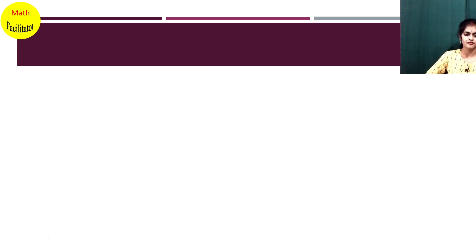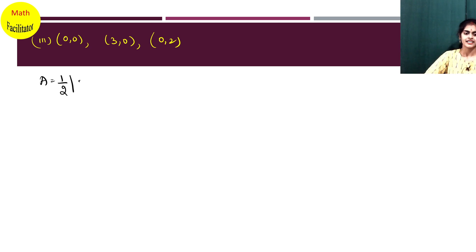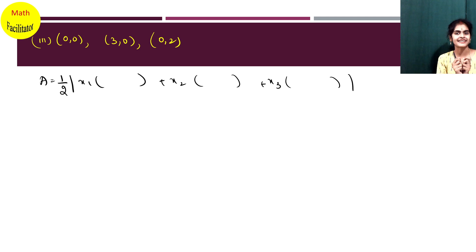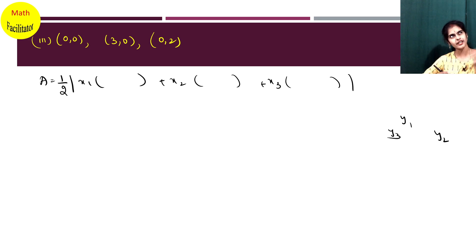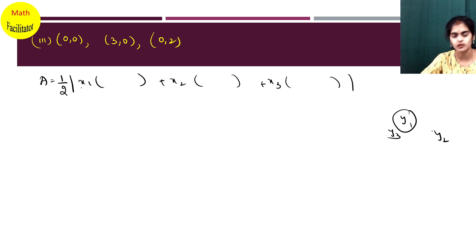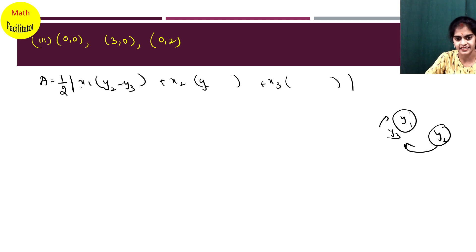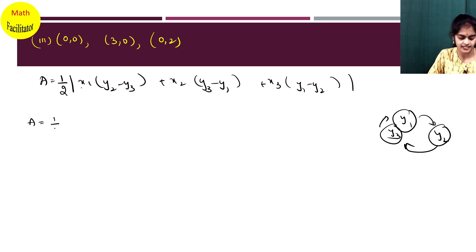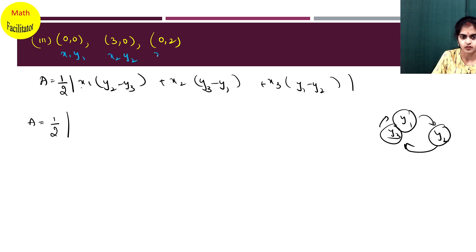I hope the formula is now easy to remember. Let's write it one more time — do it along with me. Area equals half modulus of x1 into something plus x2 into something plus x3 into something. Write y1, y2, y3 in cyclic order. Since you are taking x1, leave y1 and write y2 minus y3. Taking x2, write y3 minus y1. Taking x3, write y1 minus y2. This way there is 0% chance of error or confusion about which y to subtract.